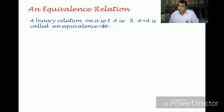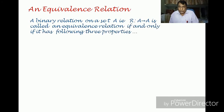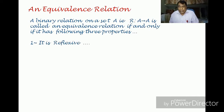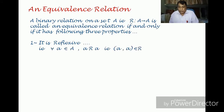If and only if it has the following three properties — that is, it should obey these three properties. Firstly, it is reflexive. That is, for every element belonging to set A, that element is related to itself. For every a belonging to capital A, a is related to a — that is, the ordered pair (a, a) belongs to R.